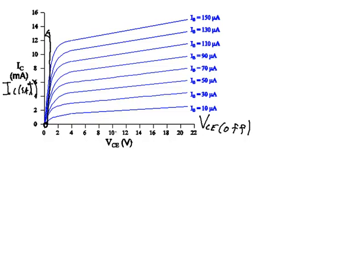It's easy to verify if you're in cutoff — you just have no forward-biased base-emitter junction, no current anywhere. But for saturation, we want to make sure we're in saturation and not in the active region. We'll still have current flowing in the active region, but a varying amount of current as we vary the base current. Saturation is when we're at the peak amount of collector current for a particular circuit.